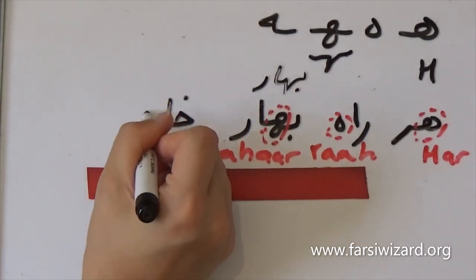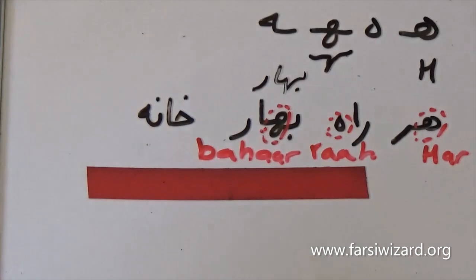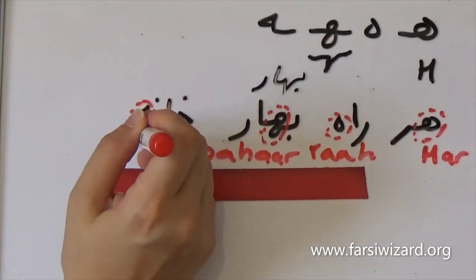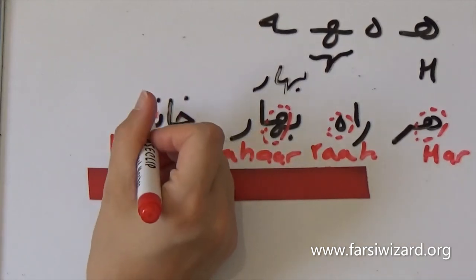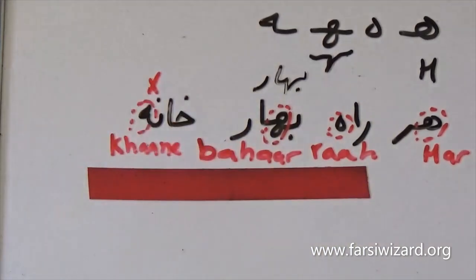Now in the fourth example we have the word khané, and here we have the letter he appearing at the end of a word, but this time it is connected to the previous letter, and this is why it looks different from the he that you saw, for example, in ra.